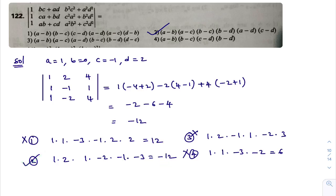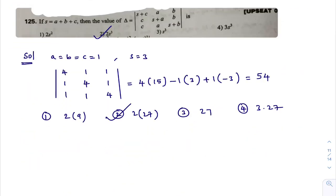Checking the third and fourth options, the third option gives a positive value (+12) rather than −12, so it is wrong. The fourth option also does not match. Only the second option gives −12 when I substitute a=1, b=0, c=−1, d=−2. So the second option is the correct answer for question 122.